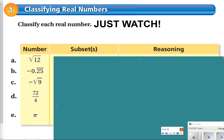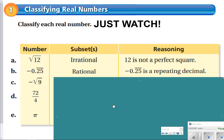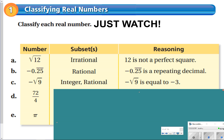This one you're just going to watch as we talk through each example. The square root of 12 is irrational because there's no perfect square for 12 — no whole number times itself equals 12, so it results in a repeating decimal. Letter B is also irrational because it is a repeating decimal. Letter C is an integer and a rational number because the square root of 9 is 3, keeping the negative gives us negative 3, which can be written as the fraction negative 3 over 1. Any whole number is also technically a rational number.